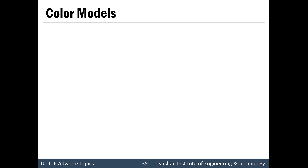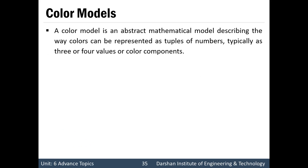The first question is: what is a color model? A color model is an abstract mathematical model — a mathematical representation that describes the way color can be represented as a tuple of numbers, typically three or four values.